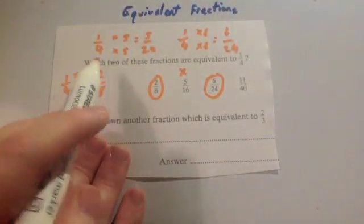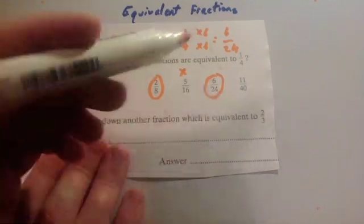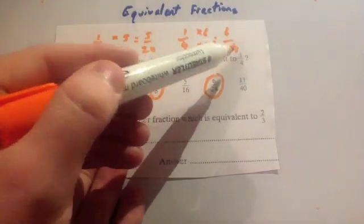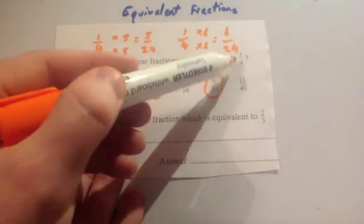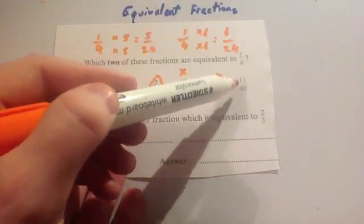I suppose we're finished because it says which two of these fractions are equivalent to a quarter. Let's just check the last one, 11 over 40. Well, even just seeing this, if I times the top 1 by 10 and the bottom 1 by 10 I would get 10 over 40. So you can see that just wouldn't work anyway.